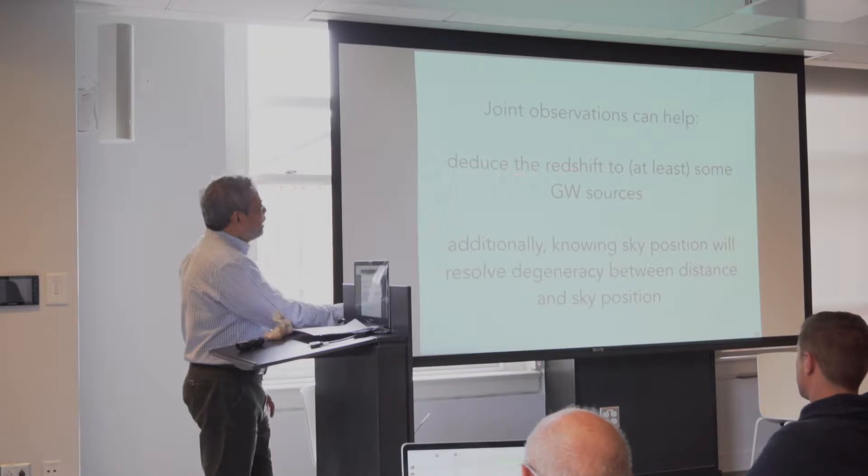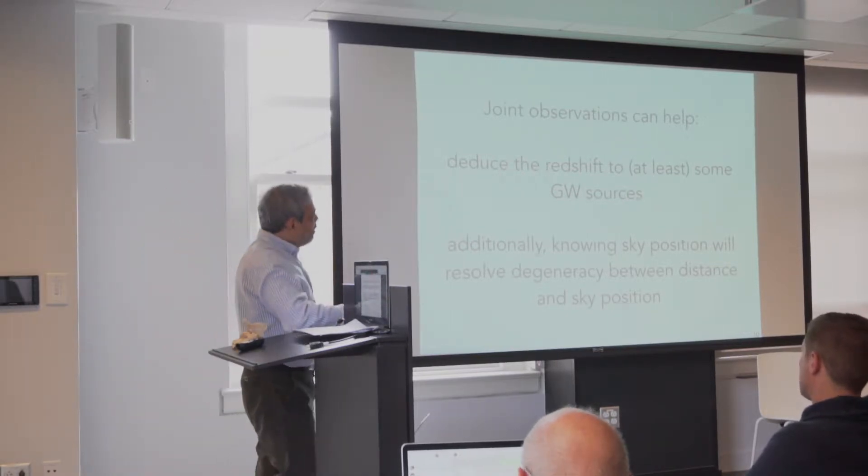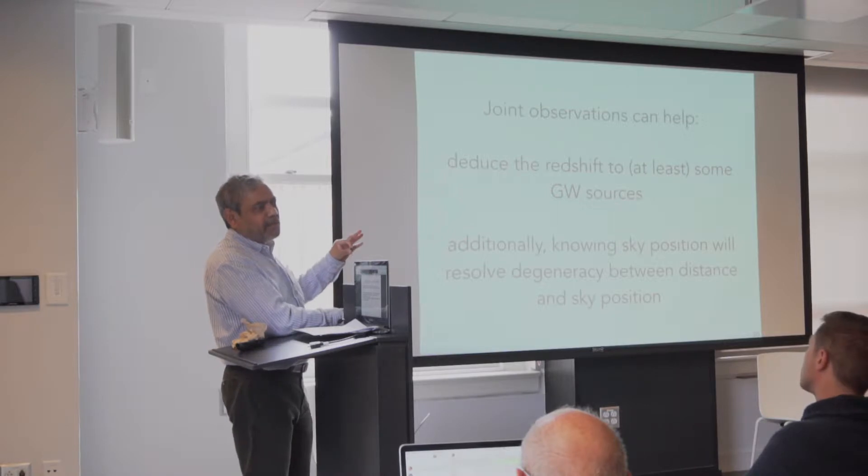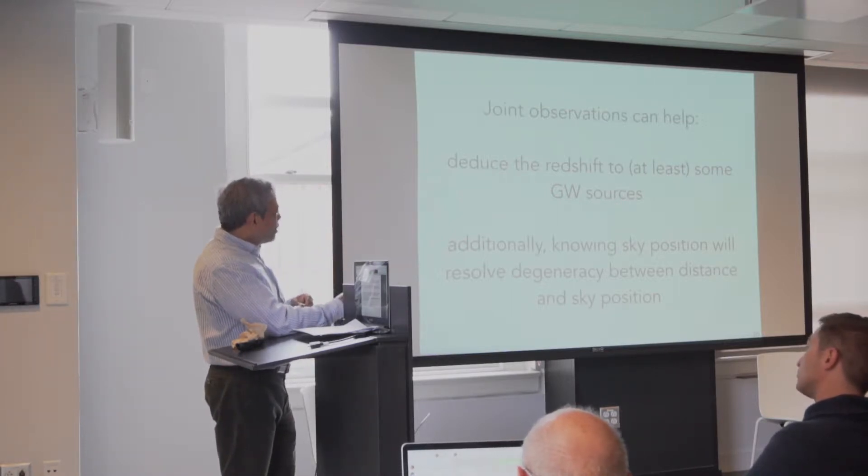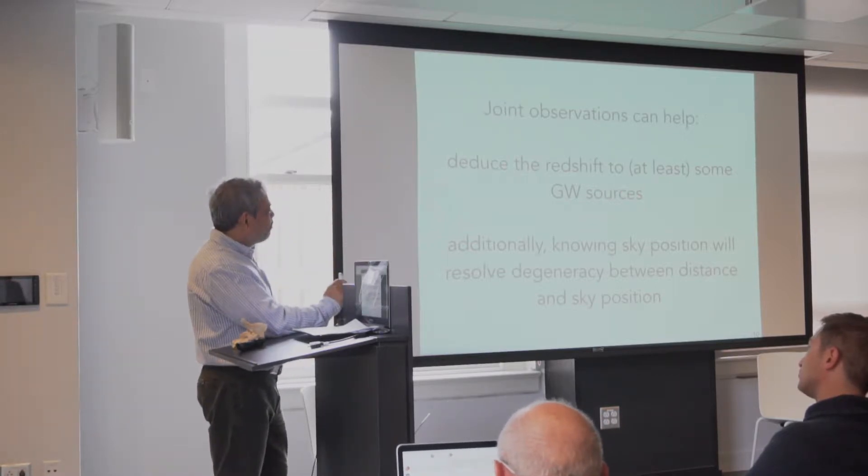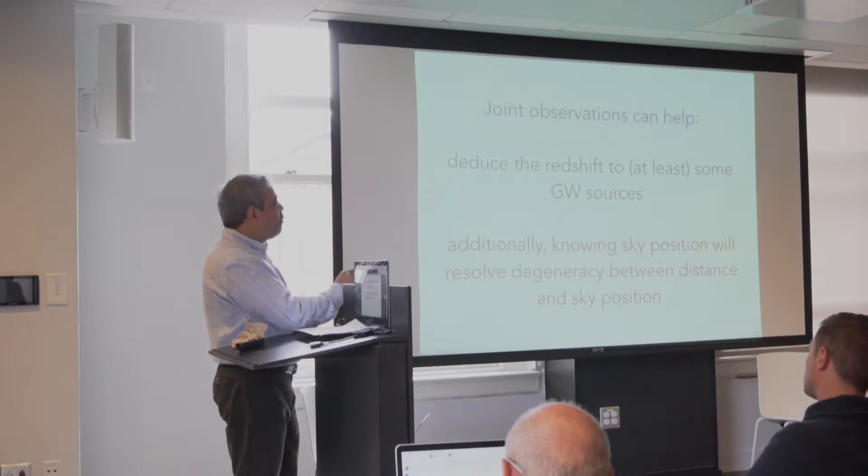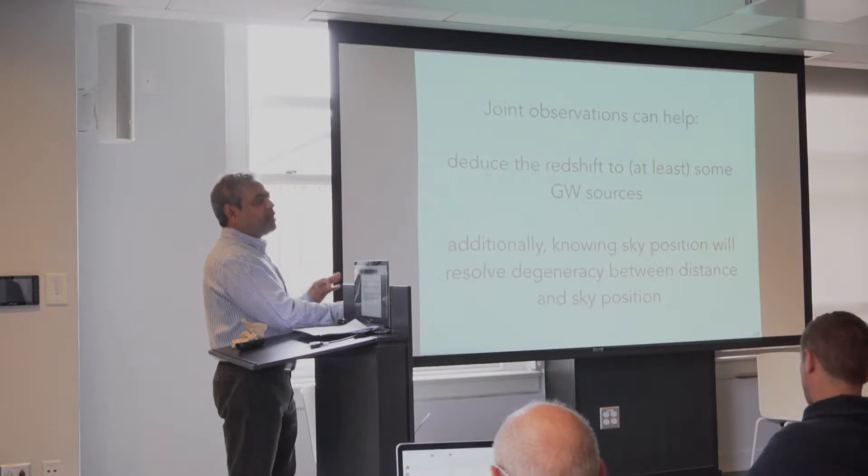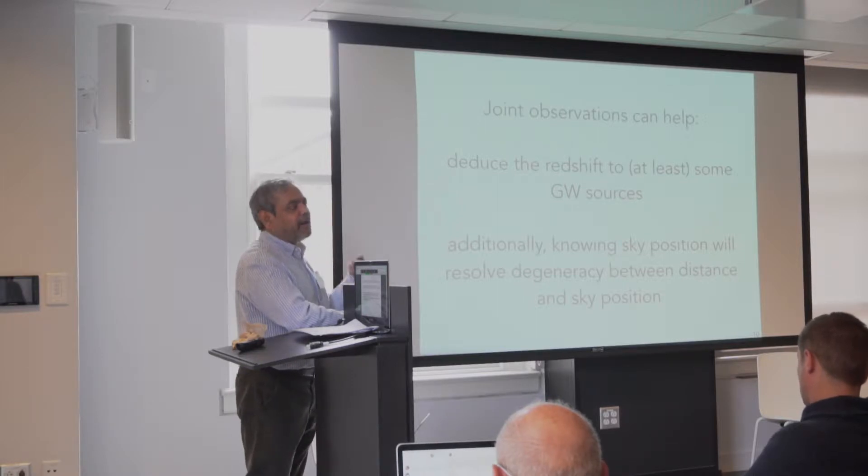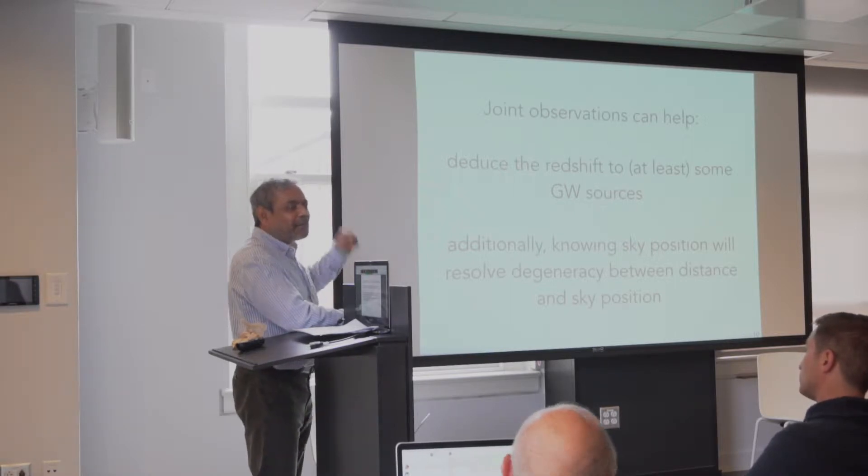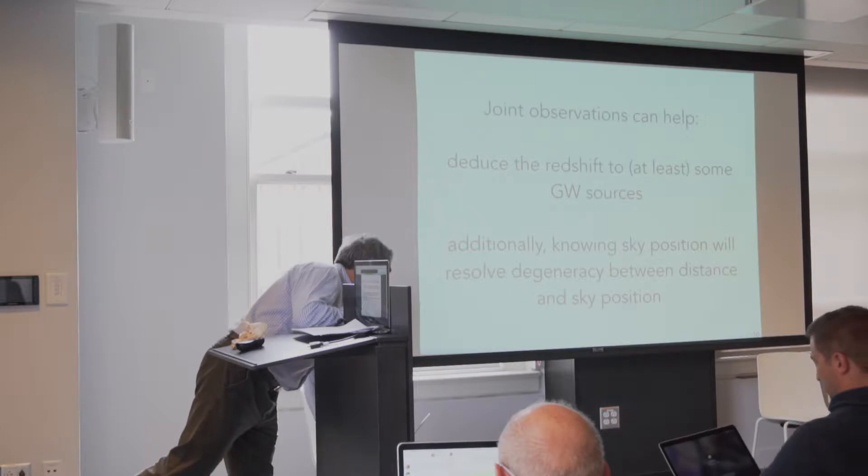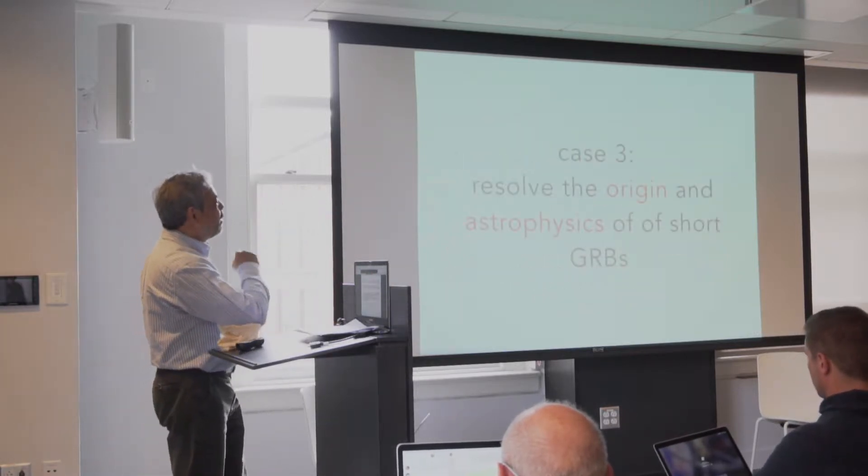Joint observation therefore can help reduce the redshift to at least some of the gravitational resources. Black holes might be difficult, but one day we might be localizing them well enough and identifying galaxies, host galaxies to get that. But electromagnetic observations therefore are needed, at least for some fraction of those sources. More importantly however, knowing where the source is located in the sky can significantly reduce the degeneracies that exist in our measurements. Because our measurements are degenerate with the source position on the sky and the distance. If we can get the distance and the source position, we can measure other things much more accurately and increase the scientific benefit of gravitational wave observations in general.